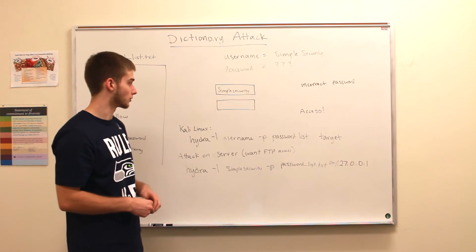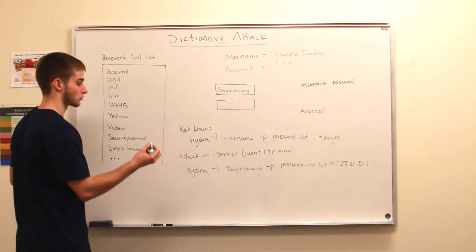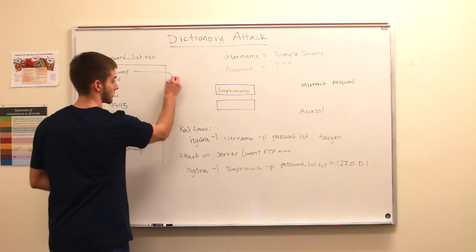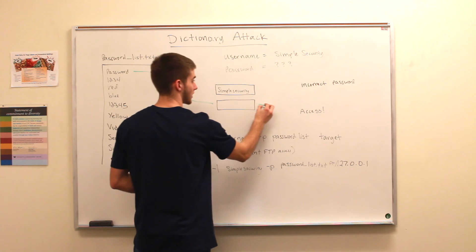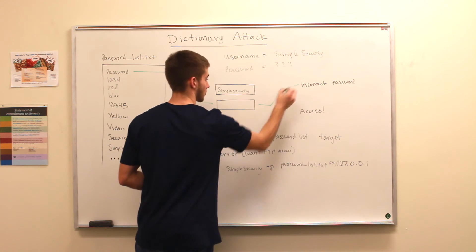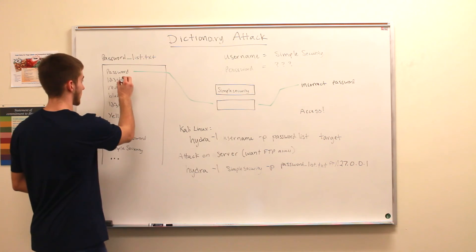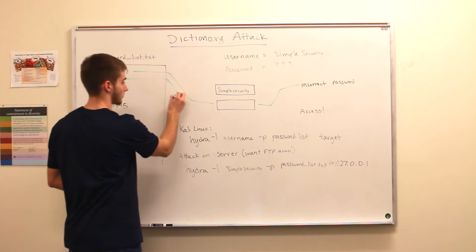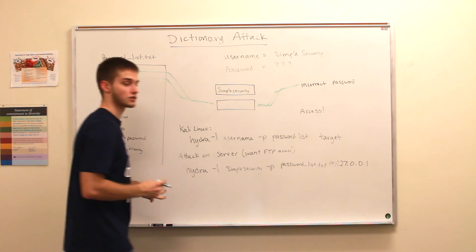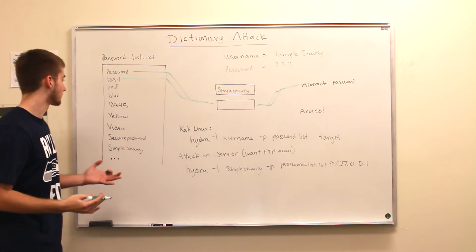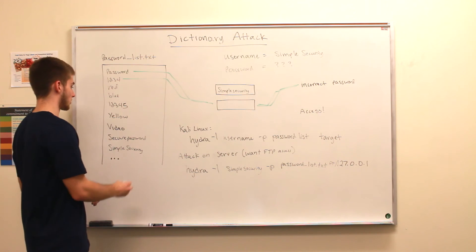What that will do is essentially try a password and find out that it's incorrect. It's going to go through the list, try the next password, find out that that is also incorrect, and keep going until it eventually stumbles across the correct password.